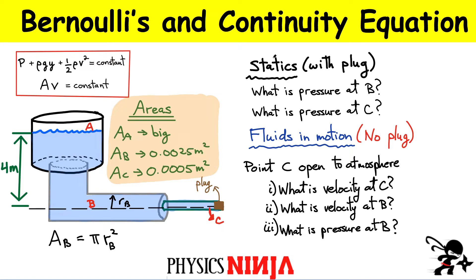We have two different situations. In case one, I'm assuming there's a plug at the end, so nothing is moving — it becomes a hydrostatics problem. In case two, we remove the plug and water flows through the reservoir and pipes. For the static case, we'll find the pressure at points B and C. When we remove the plug, we'll find the velocity at C and B, and the pressure at B once things are moving. We'll use Bernoulli's equation and the continuity equation: area times speed equals a constant.